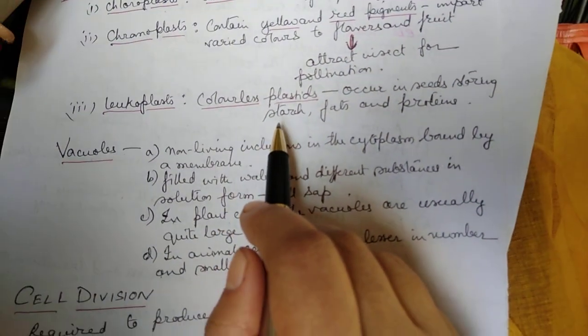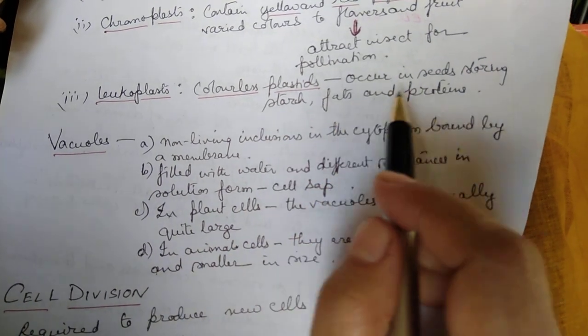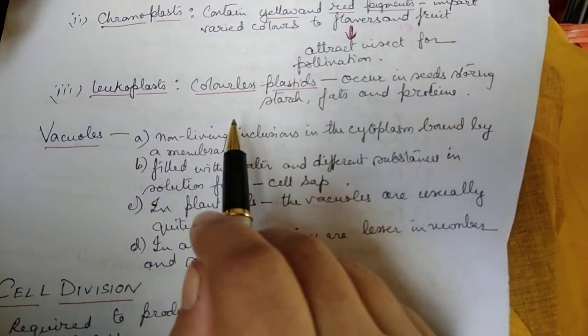Now leucoplast, leucoplasts are colorless plastids. They occur in the seeds, storing starch, fats and proteins.